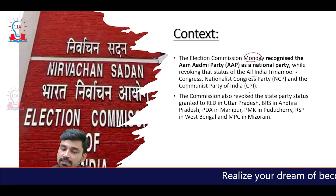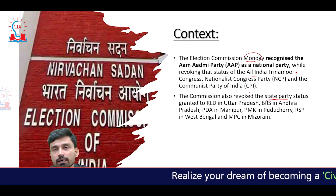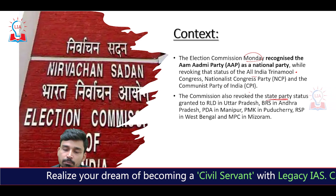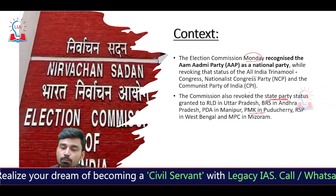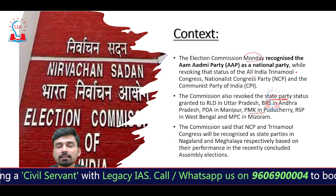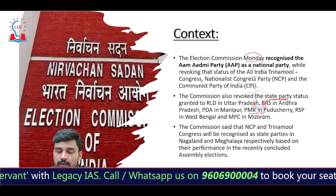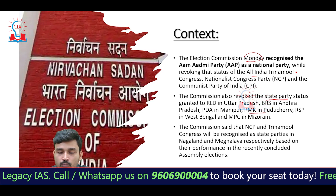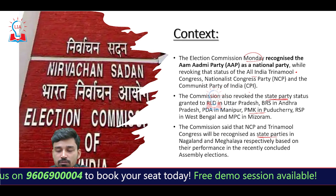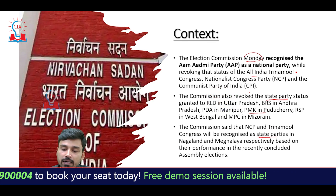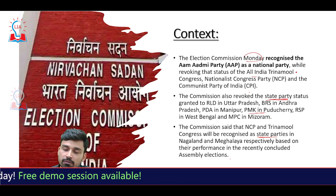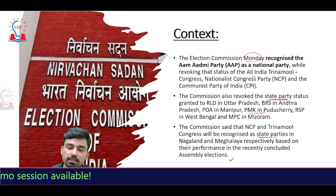The Commission also revoked the State Party status granted earlier to Rashtriya Lok Dal in Uttar Pradesh, BRS in Andhra Pradesh, PDA in Manipur, PMK in Puducherry, RSP in West Bengal, and MPC in Mizoram. In the same press conference, the Commission noted that NCP and Trinamool Congress will now be recognized as State Parties in Nagaland and Meghalaya respectively, based on their performance in the recently concluded assembly elections.